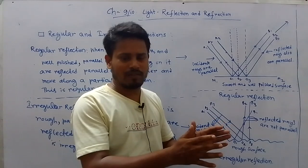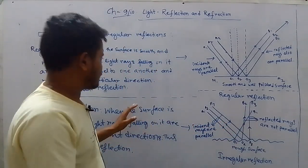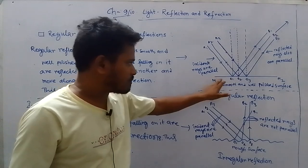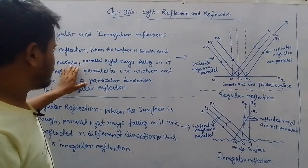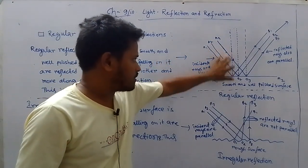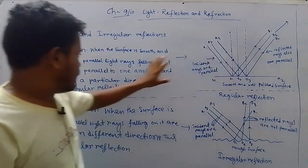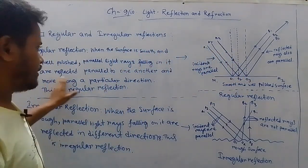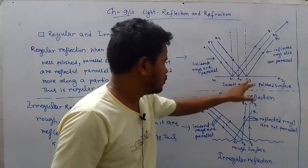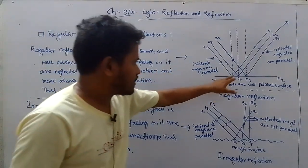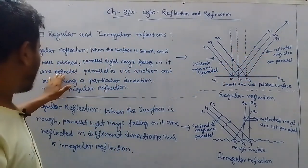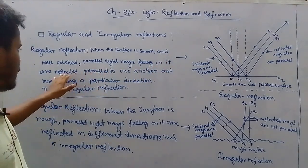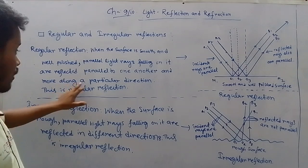Let us read the definition of regular reflection. When a surface is smooth and well-polished, parallel light rays falling on it — at points O1, O2, O3 — are reflected along O1B1, O2B2, O3B3, parallel to one another, and move along a particular direction.